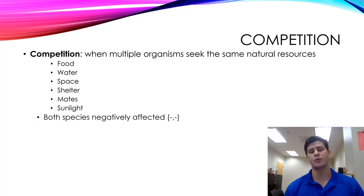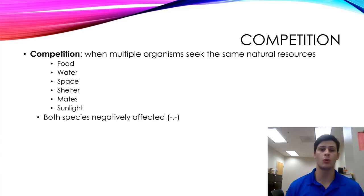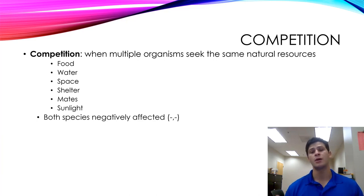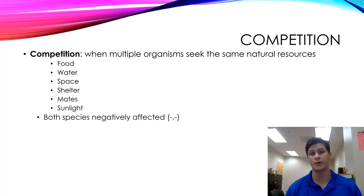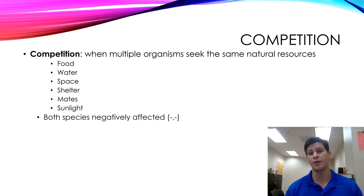The first interaction we're going to go over is competition. Competition is when multiple organisms seek the same types of natural resources. Different resources for an organism can be a variety of things: food, water, space, maybe shelter or habitat, or mates if males are competing for the right to mate with a female in order to pass their genes along and reproduce.